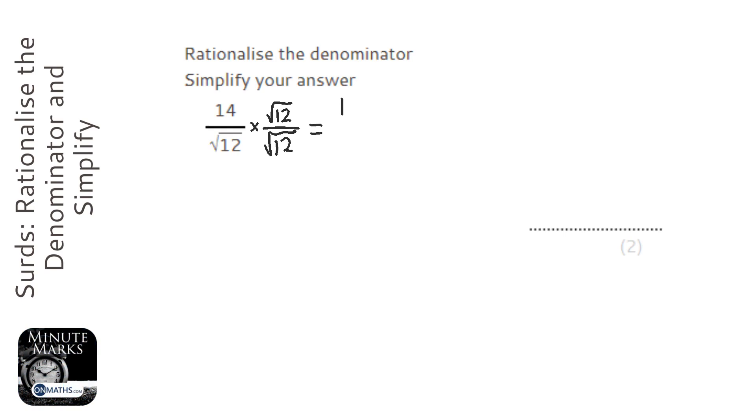At the top, that leaves us with 14√12, and at the bottom, whenever you multiply a root by itself, you just get the number without the root. Now you might notice that 14 and 12 can cancel, so that becomes 7√12 over 6.